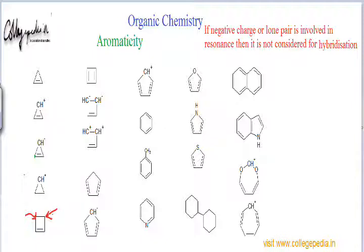The sp3 carbon atom restricts the cyclic movement of pi electrons. Whenever you have an sp3 carbon atom inside the ring, that molecule will be non-planar due to sp3 hybridization, and there will be no cyclic uninterrupted delocalization. So that molecule can neither be aromatic nor anti-aromatic — it has to be non-aromatic.